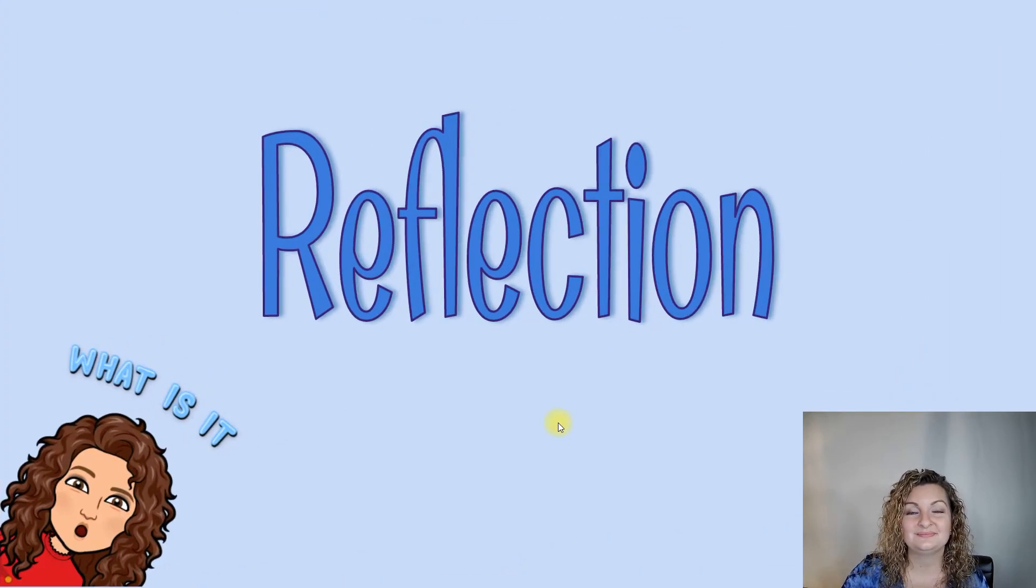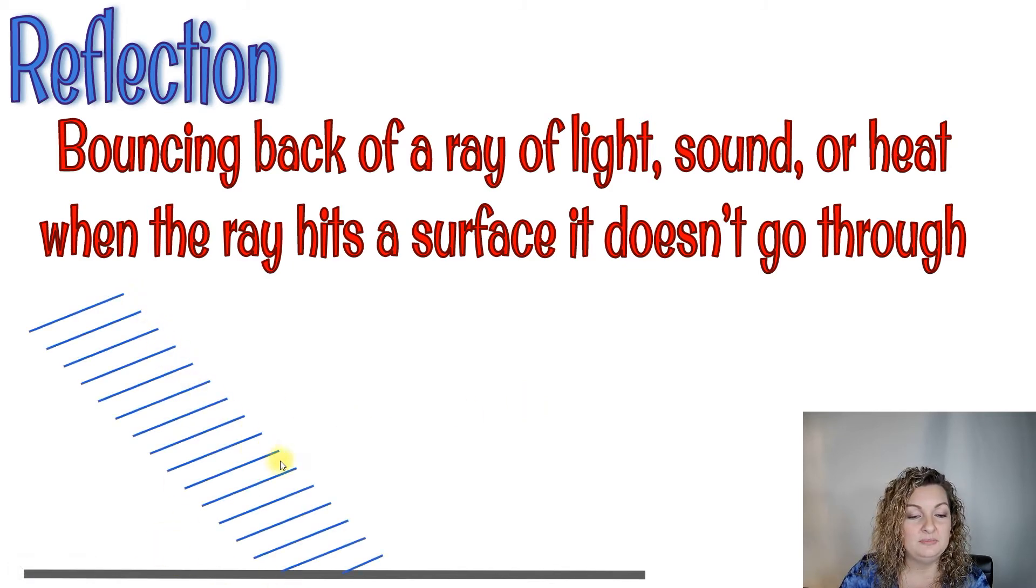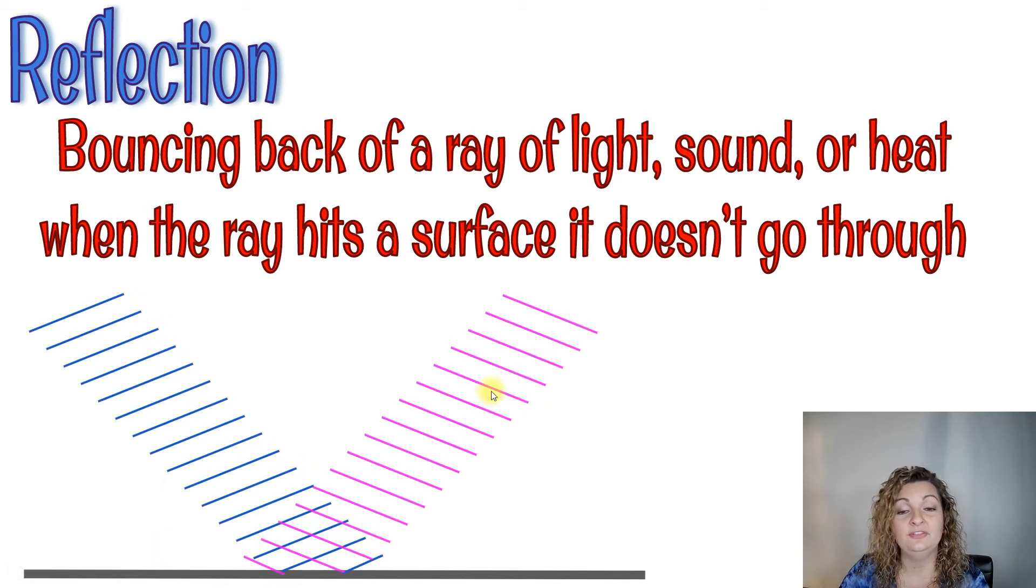Reflection. So reflection is the bouncing back of a ray of light, sound, or heat when the ray hits the surface it doesn't go through. So if we have a surface down here and our beam of light shines down it will reflect in the opposite direction. And remember the angle of incidence equals the angle of reflection out. So they're going to equal each other.